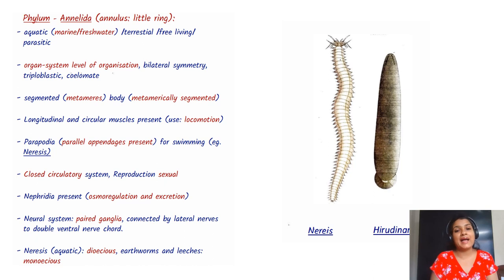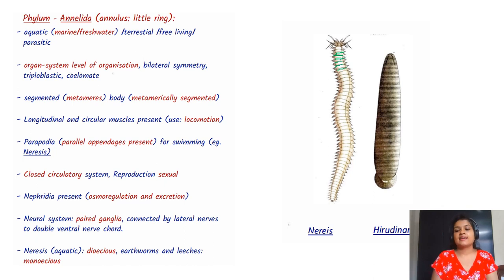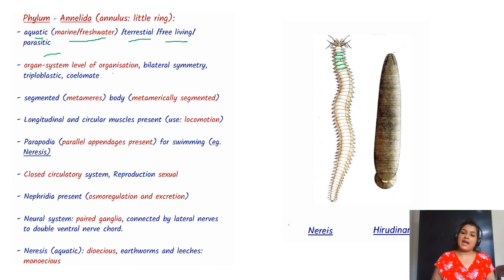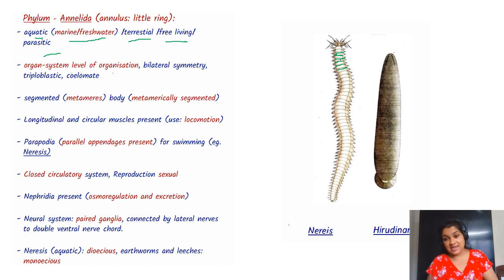Now we will come to phylum Annelida. The name comes from 'annulus,' meaning concentric rings. They can be aquatic — both marine and freshwater — or terrestrial, and free-living or parasitic.